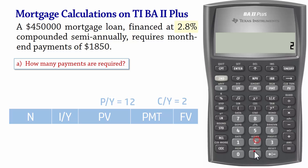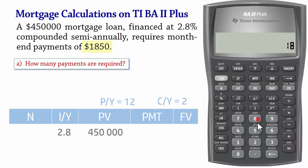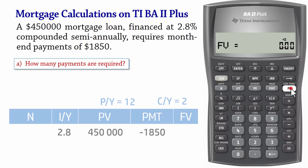Next we input 2.8 for IY for interest, $450,000 for present value, $1,850 negative for payment since payment is an outflow, and then 0 for future value since we plan to pay off the mortgage at the end.